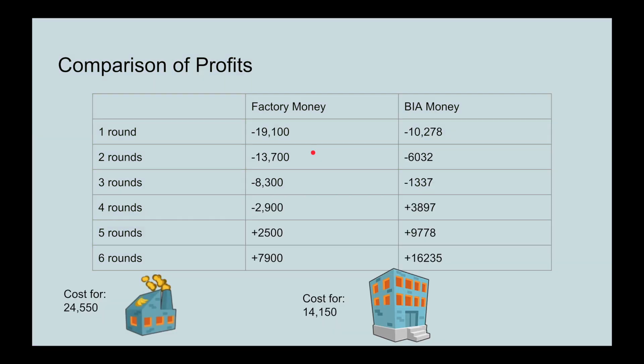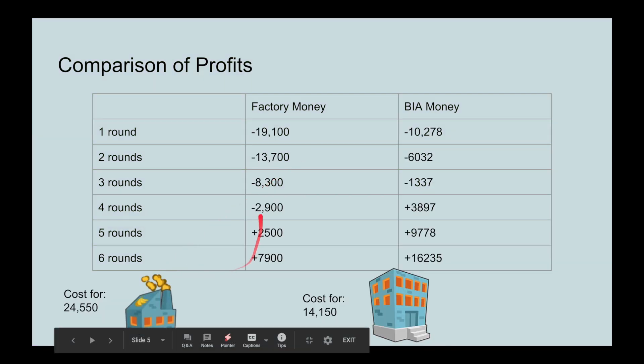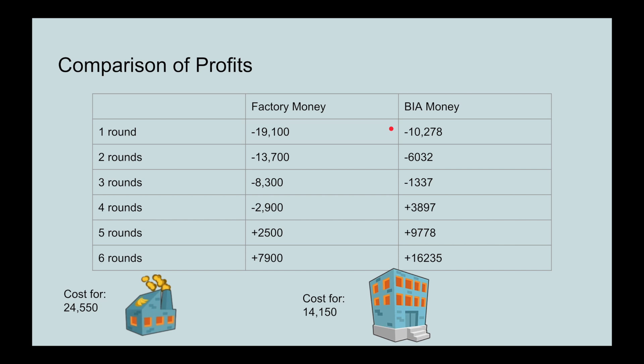But the factory is a lot more expensive than the BIA. If you look at the actual profits you're getting, after one round you're $19,000 in debt with the factory compared to the BIA where you're only $10,000 in debt. The BIA gets out of debt faster at four rounds, while you're still losing money until five rounds with the factory, in which you've only made a little bit of money.